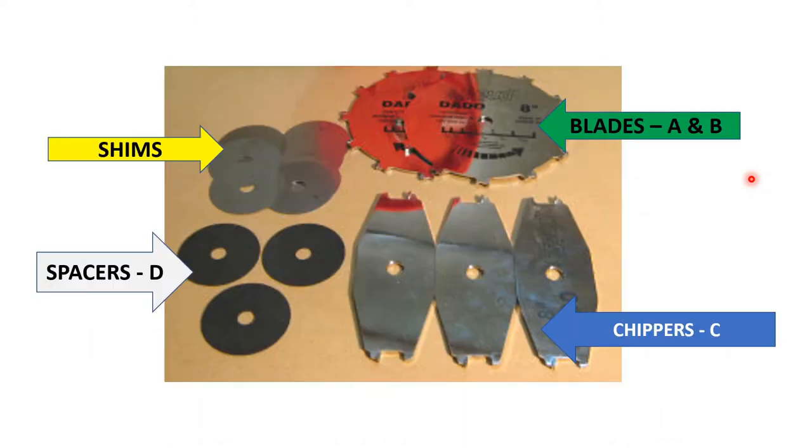So let's take apart our set. All the dado blades usually have a set of components. They usually come with blades, chippers, spacers, and thinner little shims. Also, your set of dado blades will hopefully come with an instruction manual that will tell you how to build a blade to cut to a particular thickness. So let's take a look closely at this chart because you will need to look at it to build your own blade.